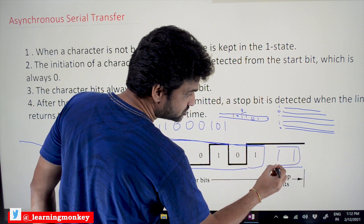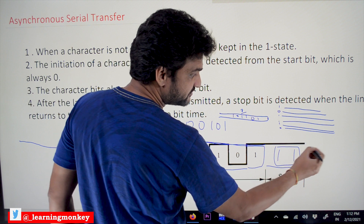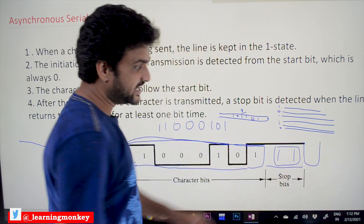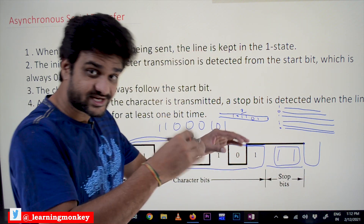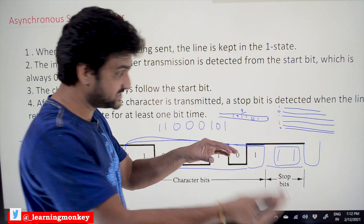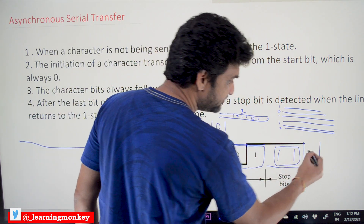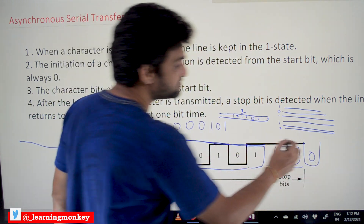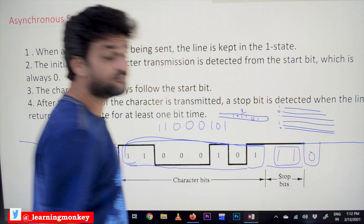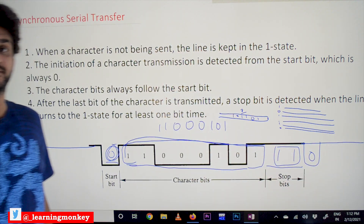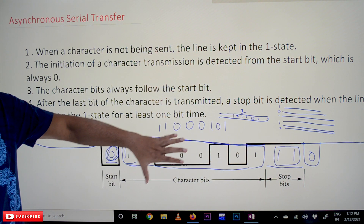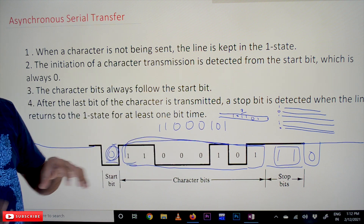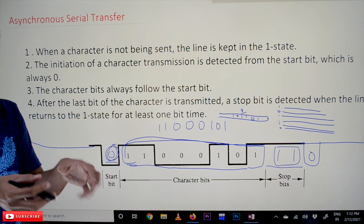After the two stop bits, if another character is pressed, the line will go to 0 again (start bit). If nothing is pressed, the line remains continuously at 1. This is how the asynchronous serial transfer happens whenever a key on the keyboard is pressed.